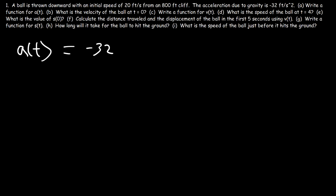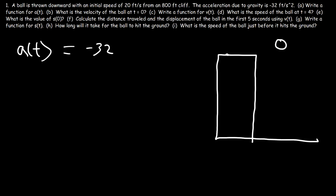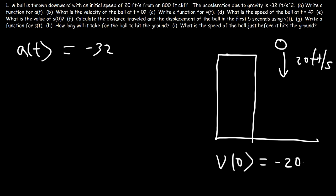Now let's move on to part B. What is the velocity of the ball at t equals zero? If we draw a picture — here's the building and here's the ball — the ball is not released from rest. It's thrown down with an initial speed of 20 feet per second. So v0 is negative 20, not positive 20. The speed of the ball is positive 20, but the velocity is negative 20 because velocity is dependent on direction. The ball is going in a negative y direction, so v of 0 is negative 20.